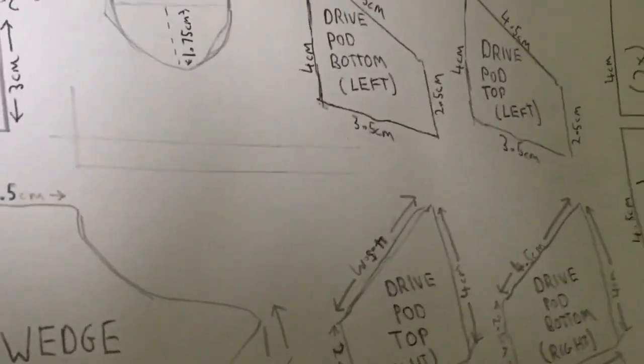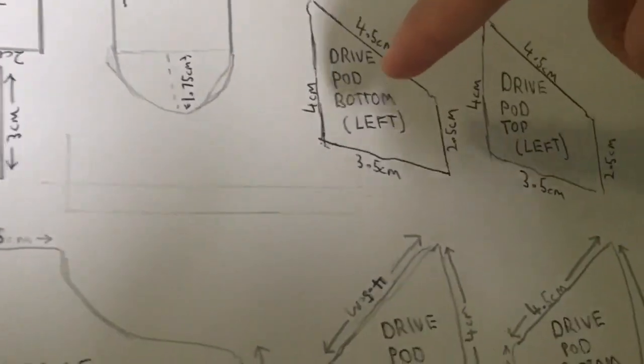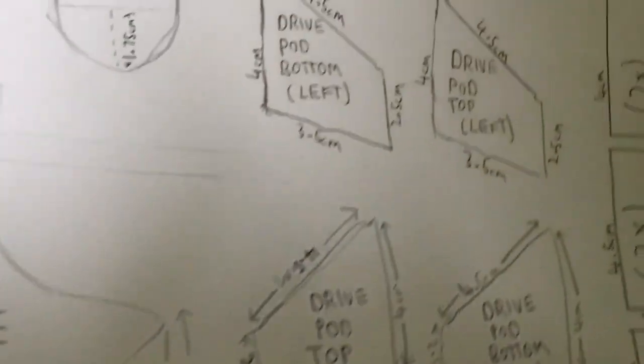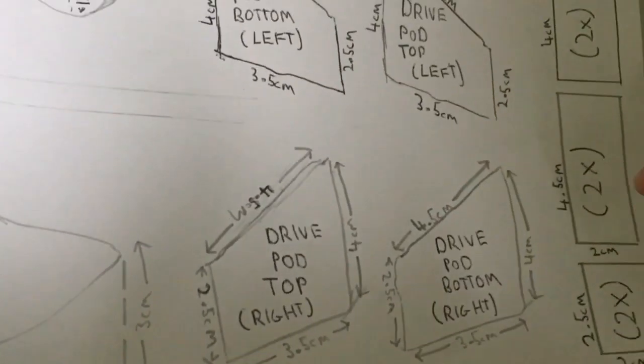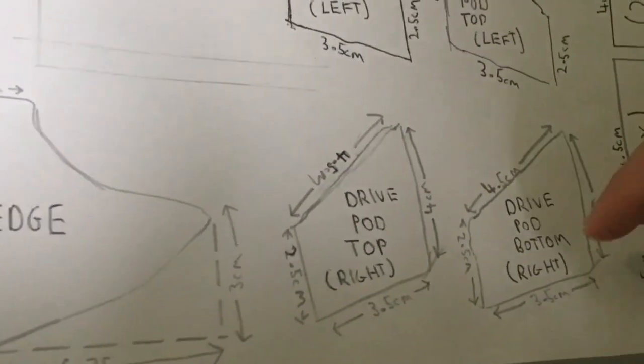So next, we will be making the drive pods. Now, in order to make the drive pods, you've got to make the left drive pod, bottom and top, and the right drive pod, top and bottom as well. You will need to draw two of each of these rectangles. They're going to be like the sides of the drive pod. And you can pretty much see where they're going to correspond.